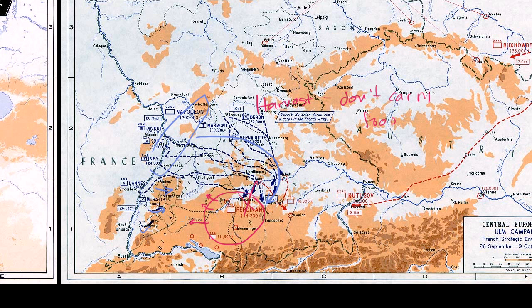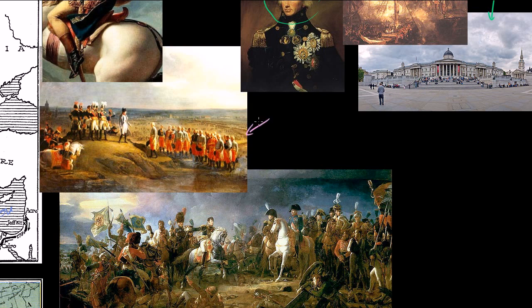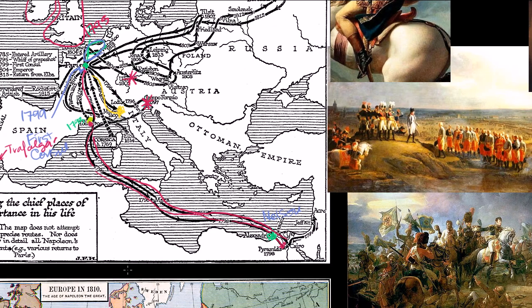Napoleon starts to view himself as invincible after Ulm. The victory was decisive, and it was achieved before the Russians could come to reinforce the Austrians — they did it by moving so quickly. The combined Russian and Austrian forces regrouped and met Napoleon's forces again, several weeks later, at Austerlitz.